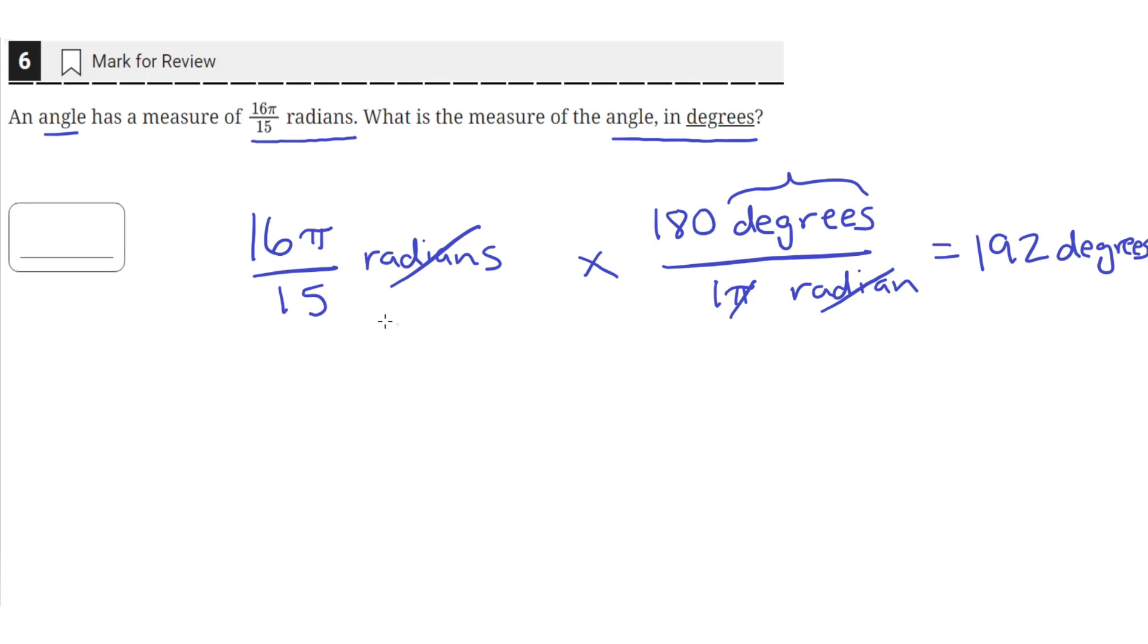The pi's here also cancel out so all you need to put into your calculator is 16 times 180 divided by 15. So the answer is 192 degrees.